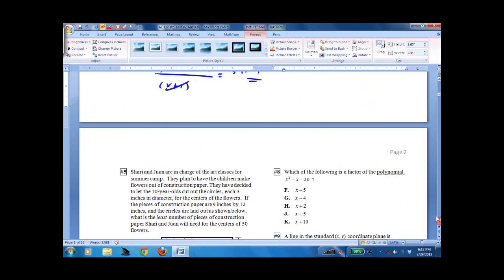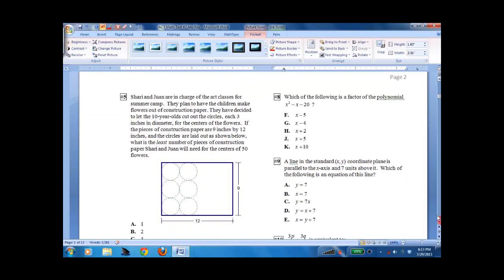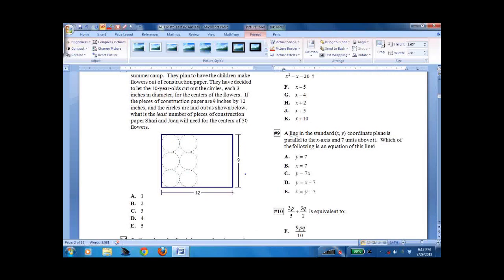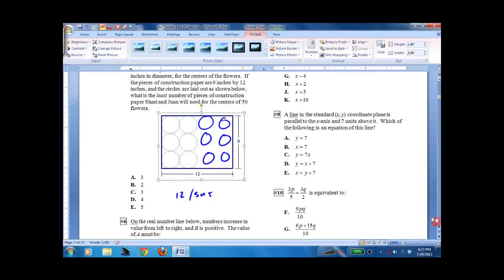Number 5, a lot of verbiage. I'm not going to read it. You can pause it and read it if you want. But they're basically cutting out circles on a 9 by 12 sheet. And they can basically get this many circles out of each sheet. So that's 4 times 3. There's 12 per sheet. And they need 50. So 4 sheets get you to 48, so they'll need 5 sheets. They'll have a lot of wasted circles.